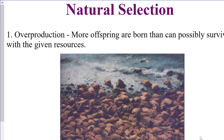We'll talk about five different points in Charles Darwin's theory of evolution by means of natural selection. Evolution means that a population is changing over time; natural selection is the mechanism Darwin came up with to explain how it happens. The picture here shows walruses, and in nature, whatever population we're talking about, there is overproduction — more individuals are born than can possibly survive, because there are only limited resources available, and many are destined to die.